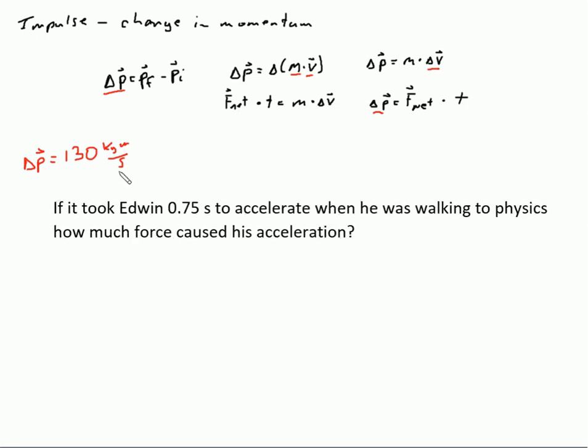So we know the impulse that he experienced, 130 kilogram meters per second. We also know that this impulse occurred in a time of 0.75 seconds. If I want to find his force, the net force that happened that caused this acceleration, I can go up in these equations. I look at things that I know: I know the change in momentum and I know the time. So I'm going to want to use this equation right here because it has the impulse in it and the time, and I can solve for the net force.